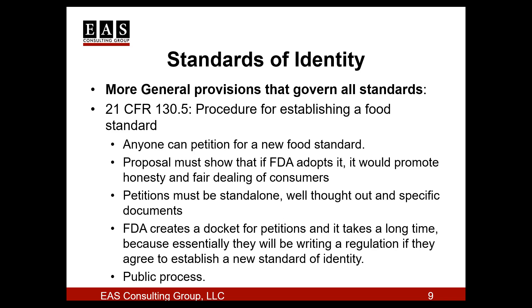Section 130.5 lays out the way that a new food standard can be created. Basically, a firm or an individual can petition for a new standard if the new standard would promote honesty and fair dealing in the interest of consumers. The petitioner must also be able to show evidence to substantiate the petition and be able to do so in a public hearing if one becomes necessary. Once a docket is opened, FDA would assign the petition and the reviewer would look it over and hold internal meetings within FDA to deliberate its merits. And as you can imagine, all this takes a lot of time.